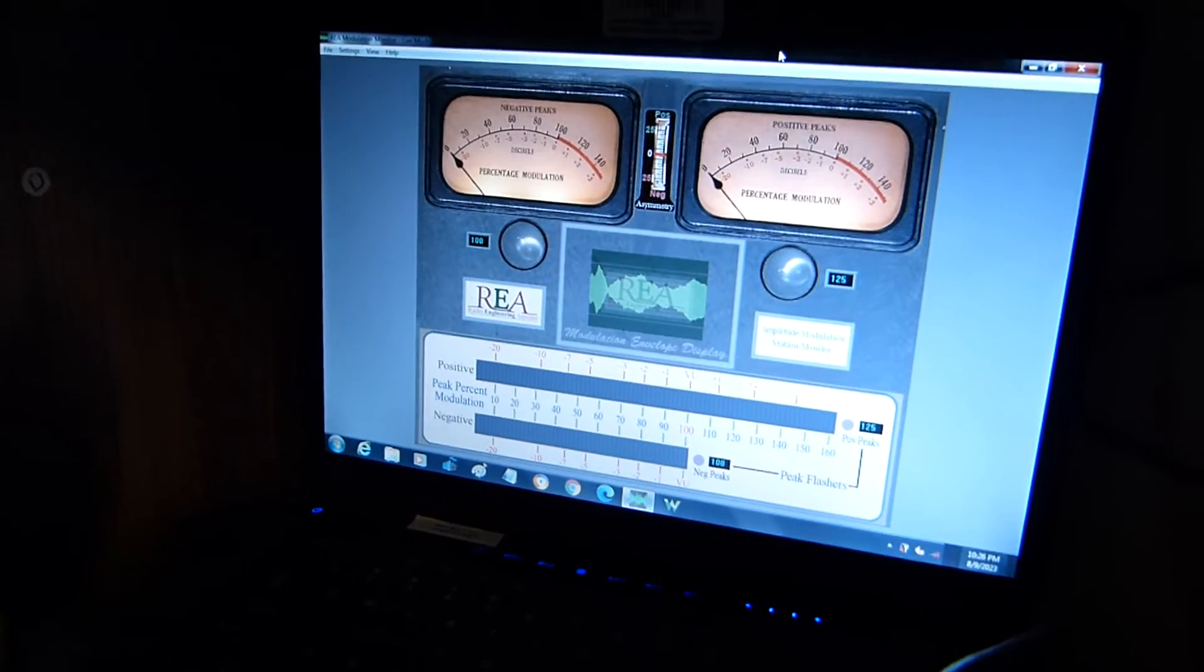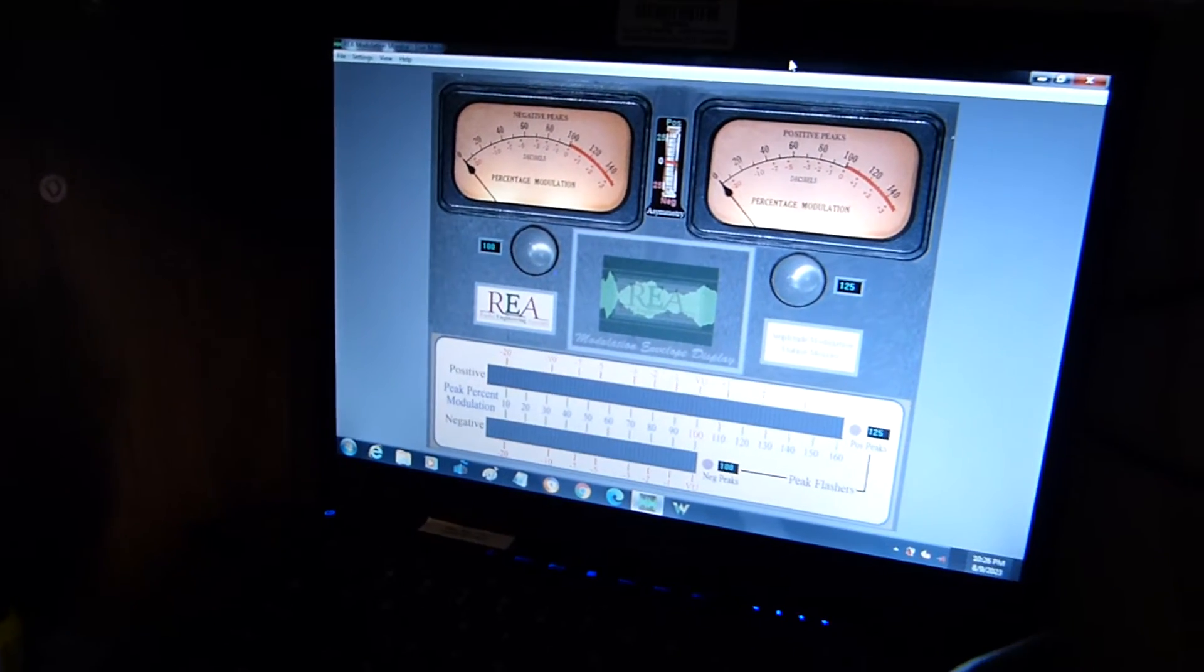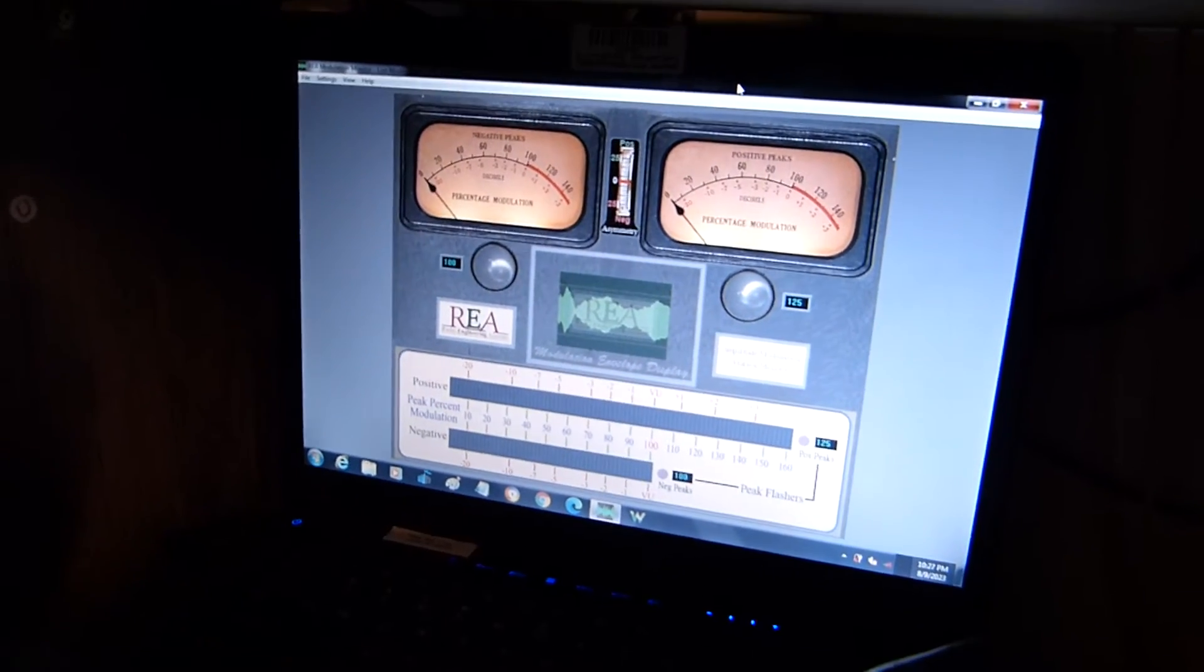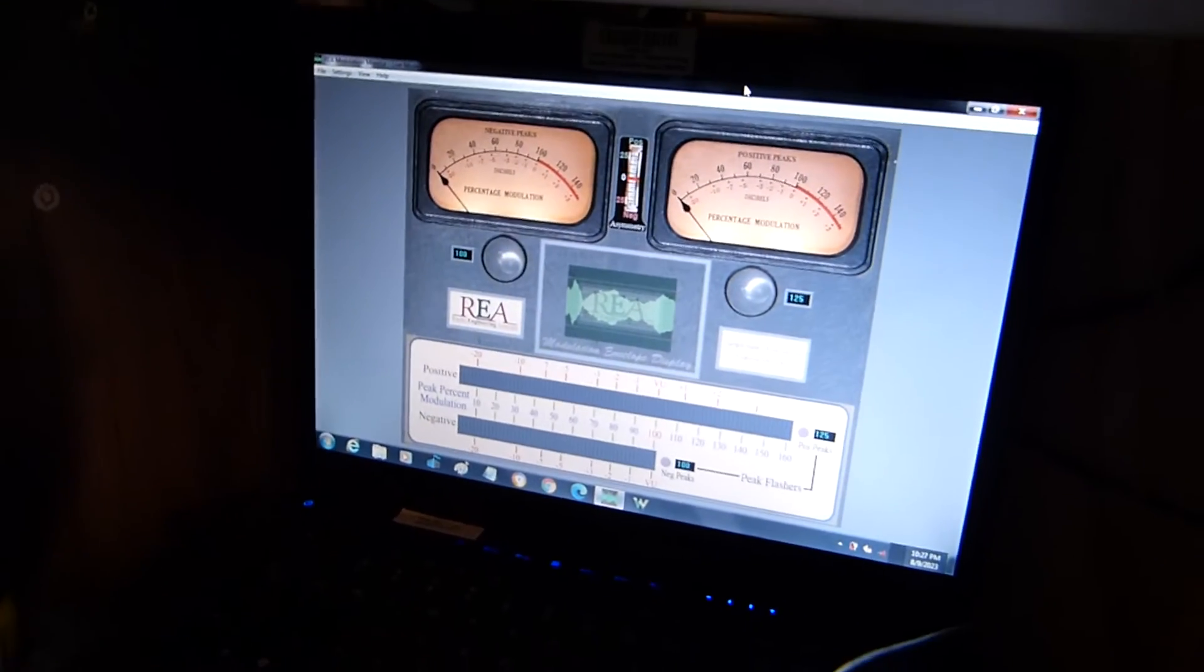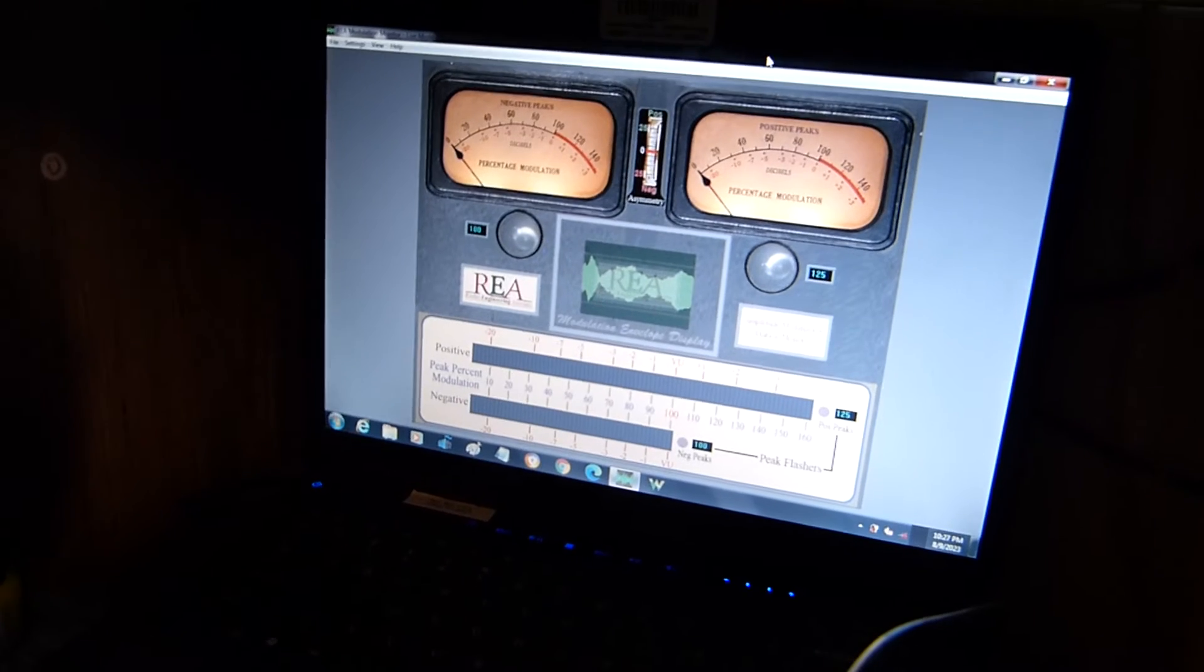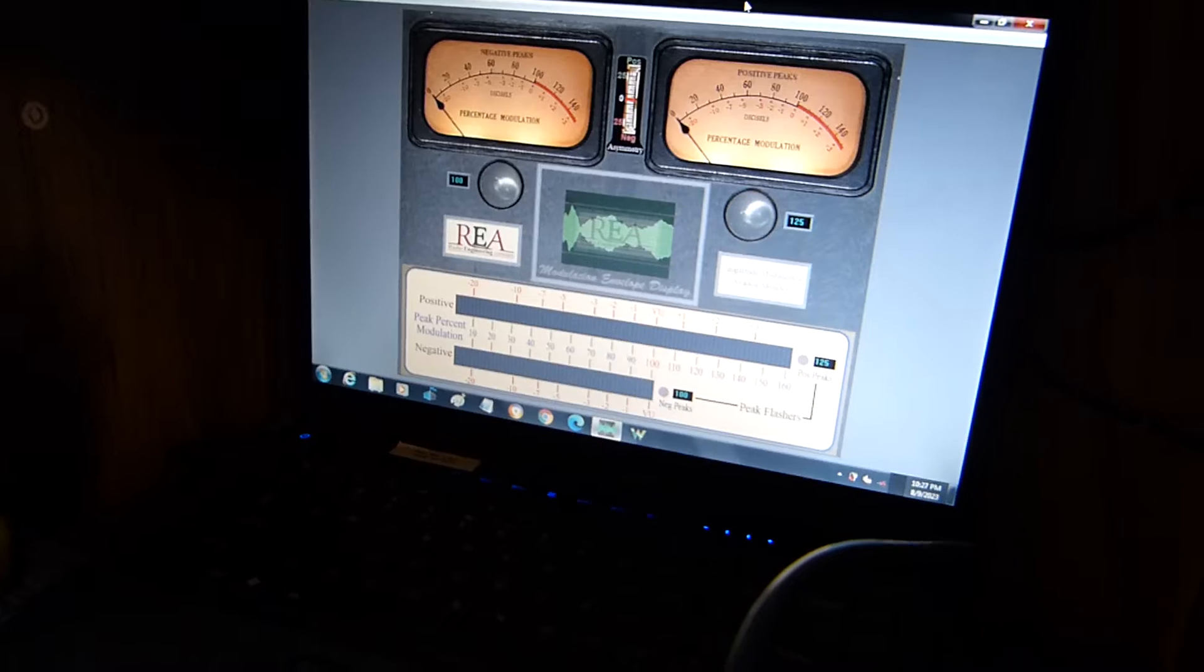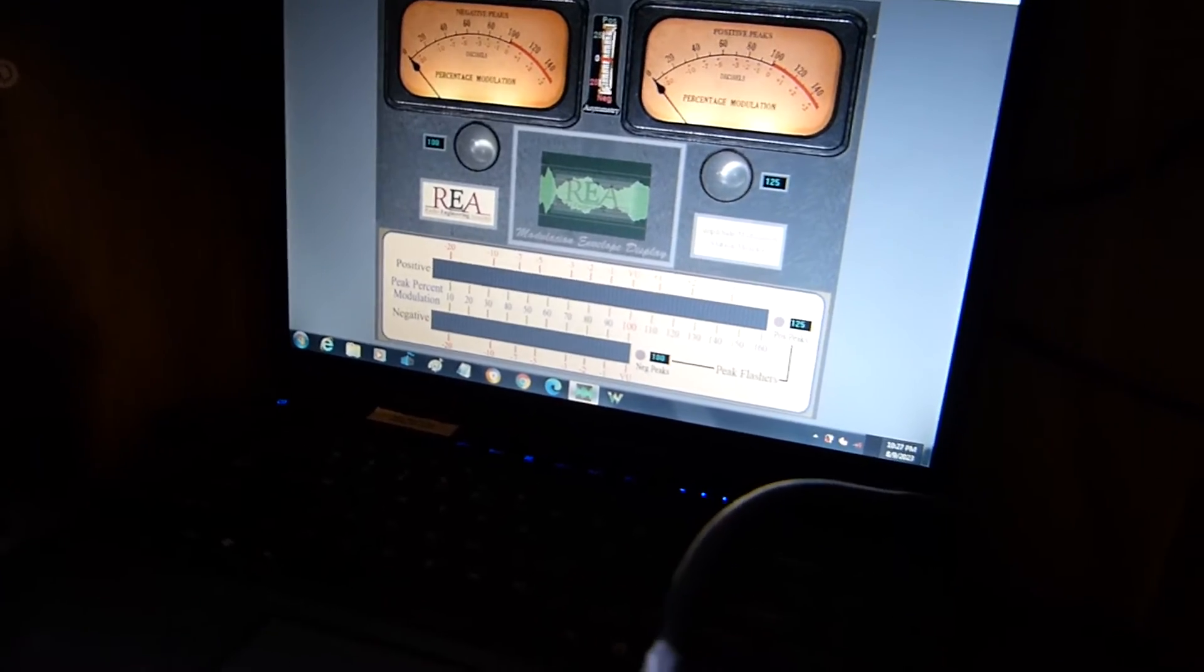I monitor the output right here on this REA modulation monitor. The left meter is negative modulation, the right meter positive. And I have a circuit I can't show you all with every detail - I have a circuit built in that's called a keep-alive circuit to keep the negative peaks from shutting the carrier completely off.